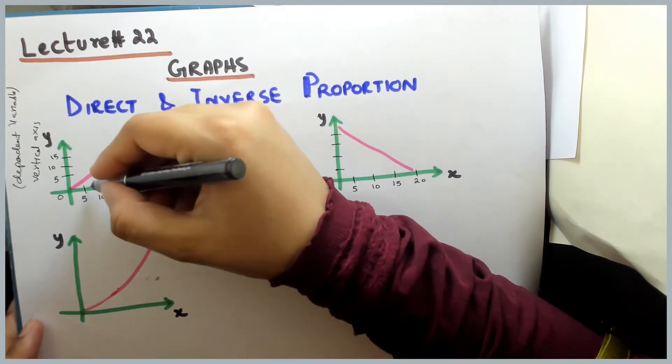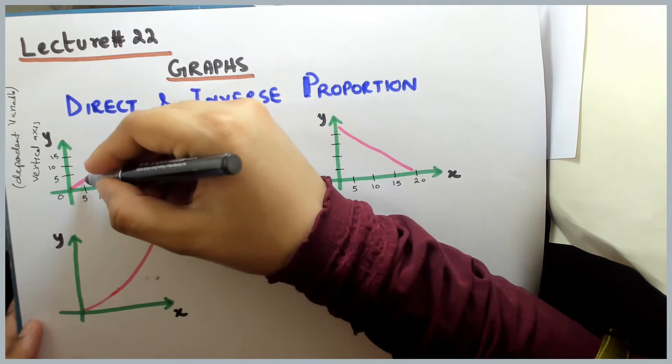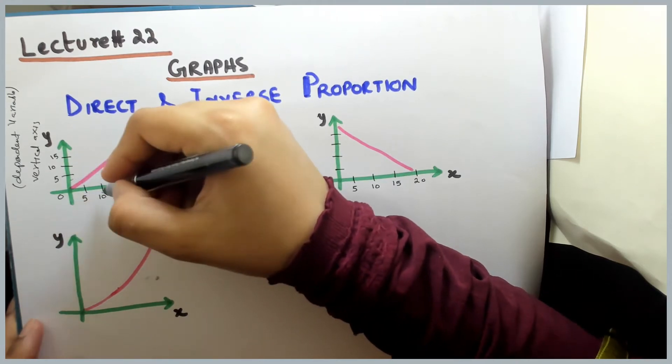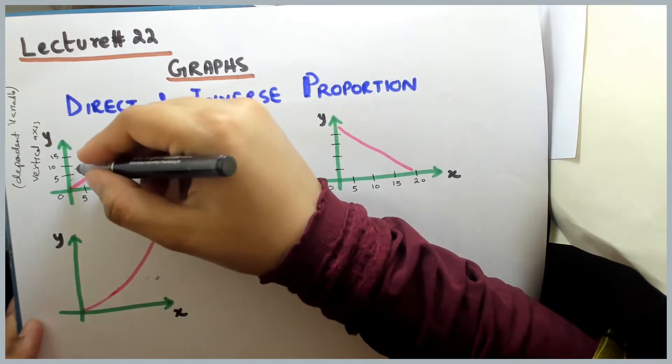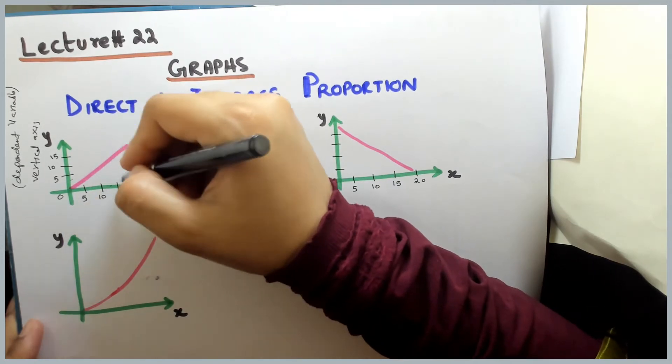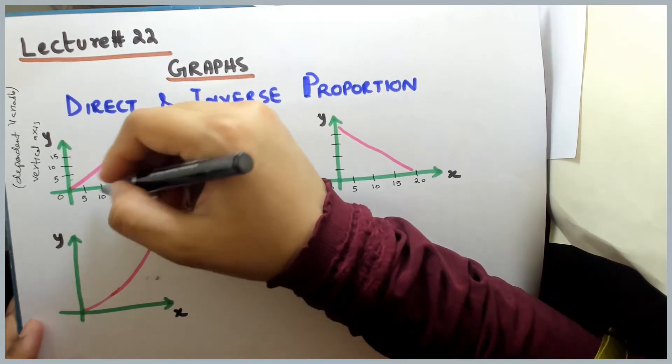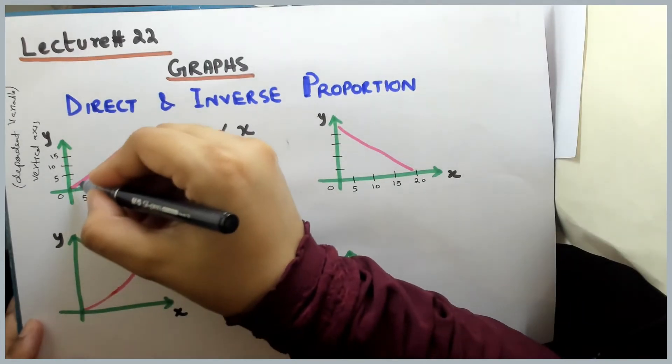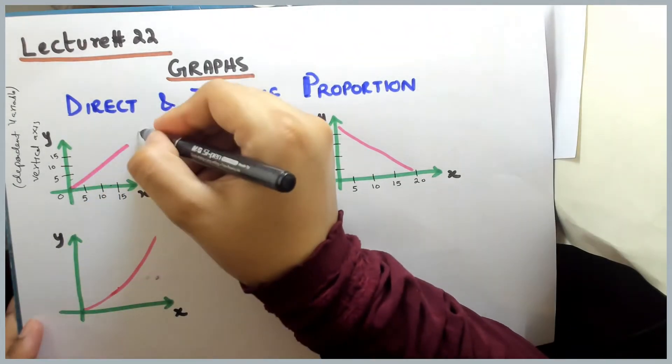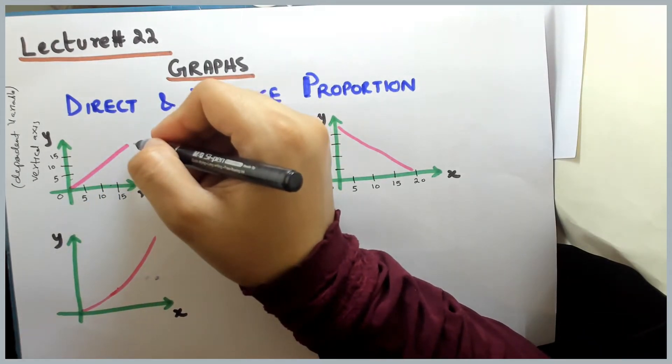When x is 5, when you look at it, then y will be increased. When x is 10, you look at it, it is also increasing. So just like your x is increased and y is increased, whenever your graph goes upward from your origin, this is direct proportion graph.